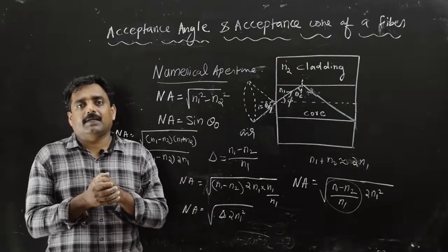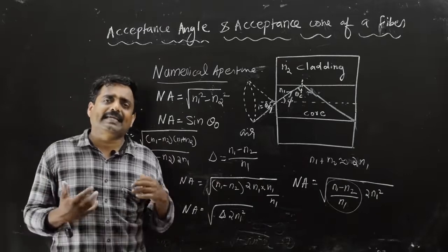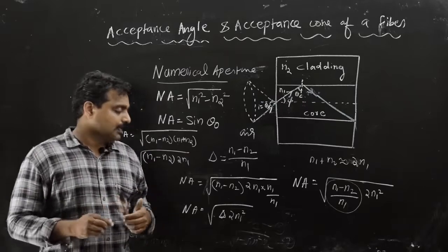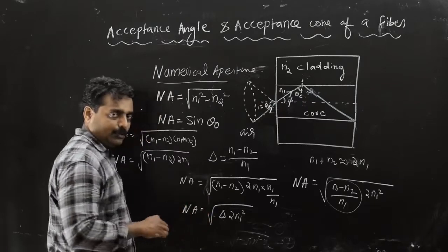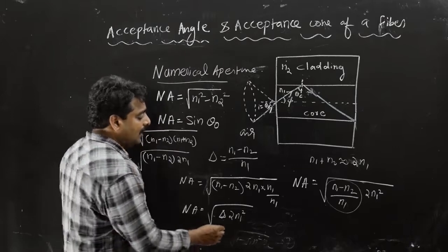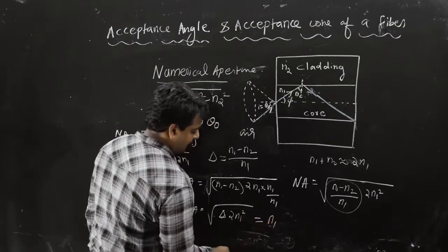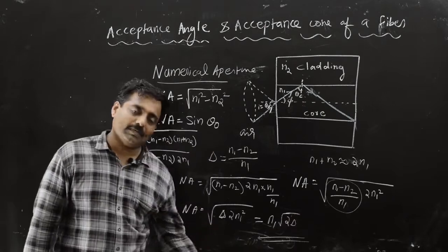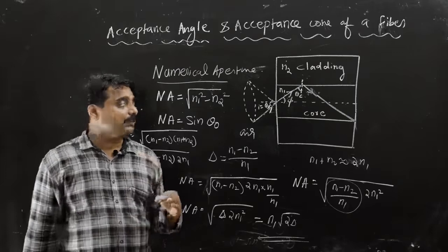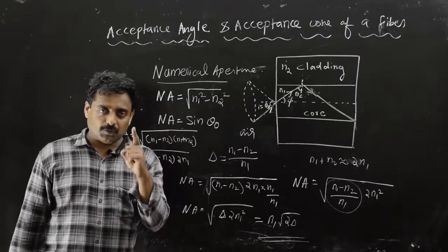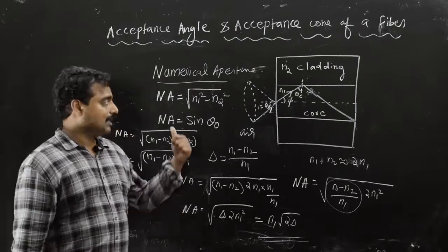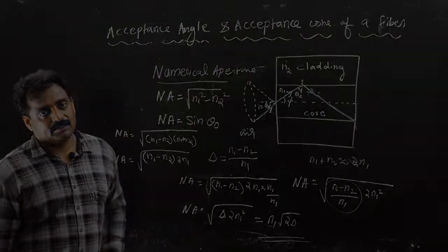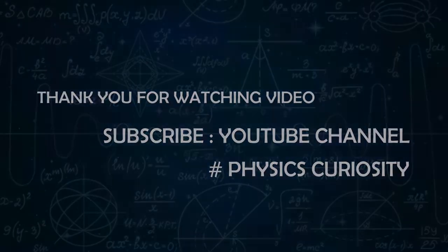The numerical aperture is also known as the figure of merit of an optical fiber. The final expression is numerical aperture equal to n1 times the square root of 2 delta. Given the refractive index of core and cladding, we can find the numerical aperture and acceptance angle.